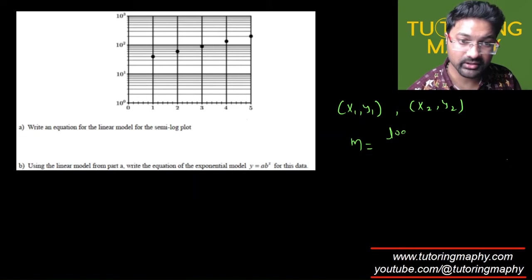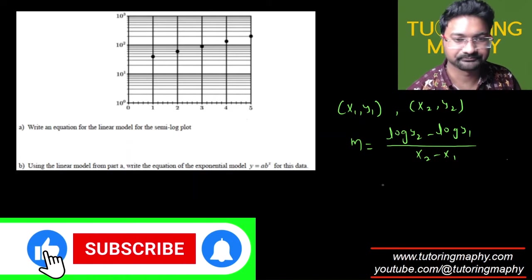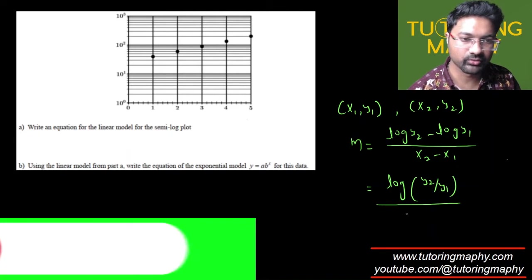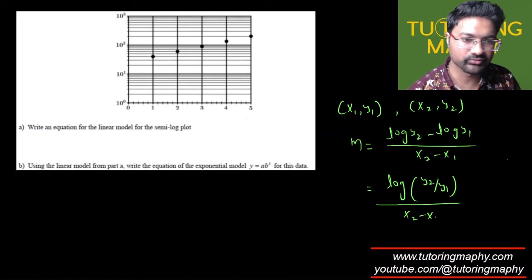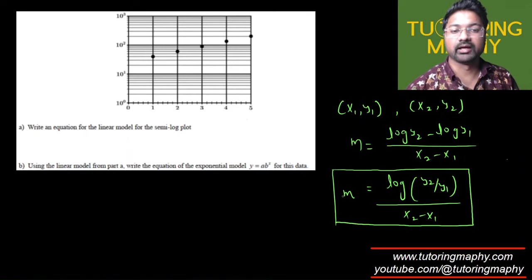So that's going to be log of y₂ minus log of y₁ over x₂ minus x₁. And what is log a minus log b? That is log of a over b. That's going to be log of y₂ over y₁ over x₂ minus x₁. So this is going to be your formula for the slope.